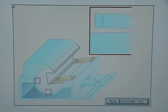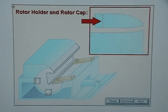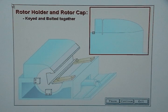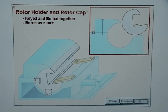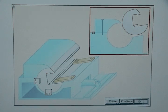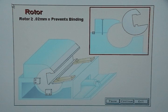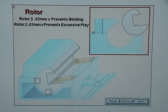The rotor holder and rotor cap are keyed and bolted together to form an assembly. The assembly is bored as a unit and then the rotor is ground to fit the bored assembly. The rotor must be at least two hundredths of a millimeter smaller than the bored assembly to prevent binding, but not greater than three hundredths of a millimeter or else there will be excessive play.